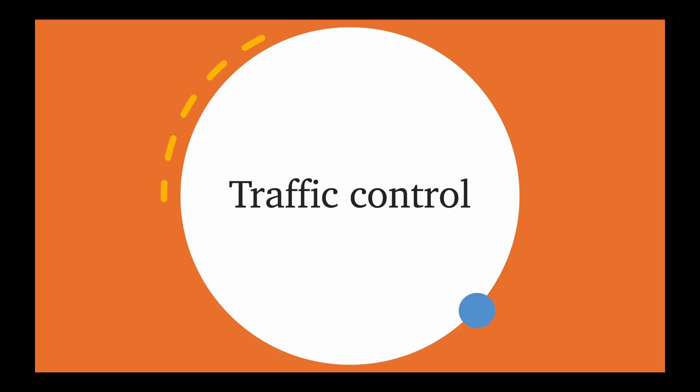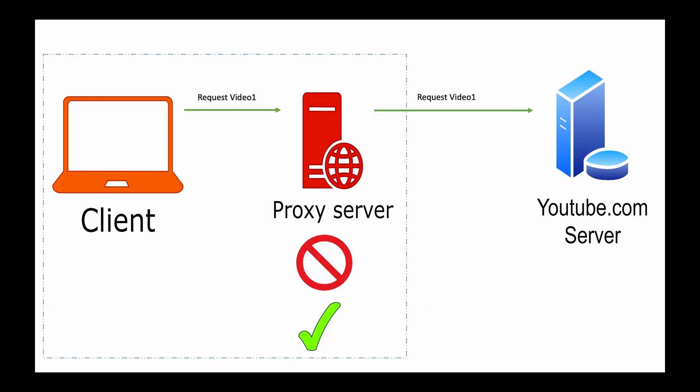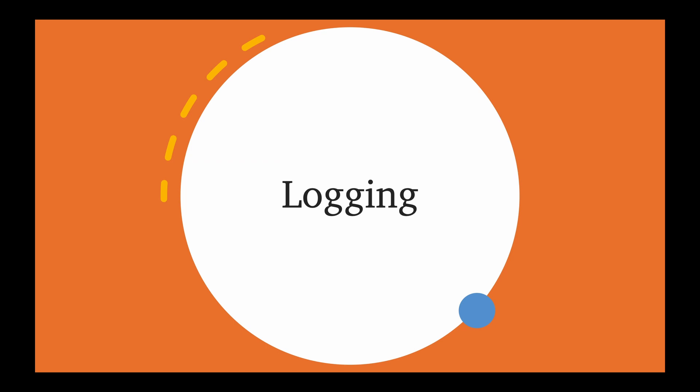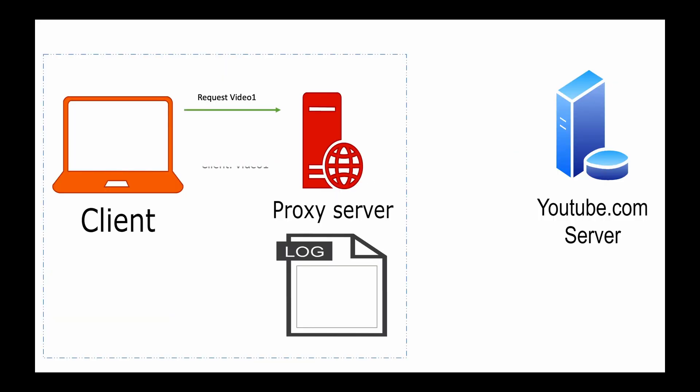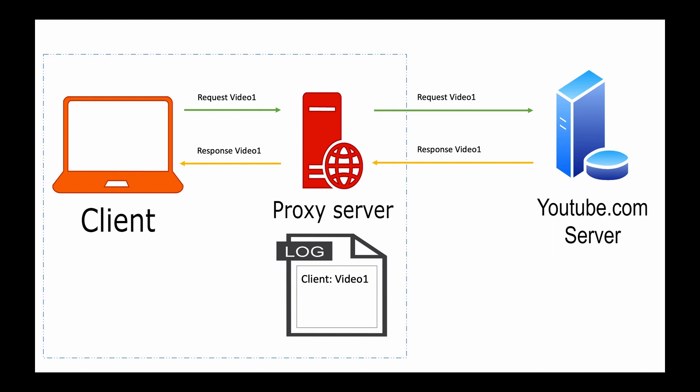Another big advantage is traffic control. Proxy servers can help in controlling the traffic as all the traffic goes through them. They can block certain content which might not be appropriate for certain reasons. For example, proxy servers in an organization can protect its employees' machines from certain malicious sites. It can also be used for geofencing. Another advantage is logging — as all the traffic goes through a proxy server, it has full visibility through logs. These logs can be used for multiple purposes, for example to identify any patterns or evaluate the need to enable caching for certain sites.